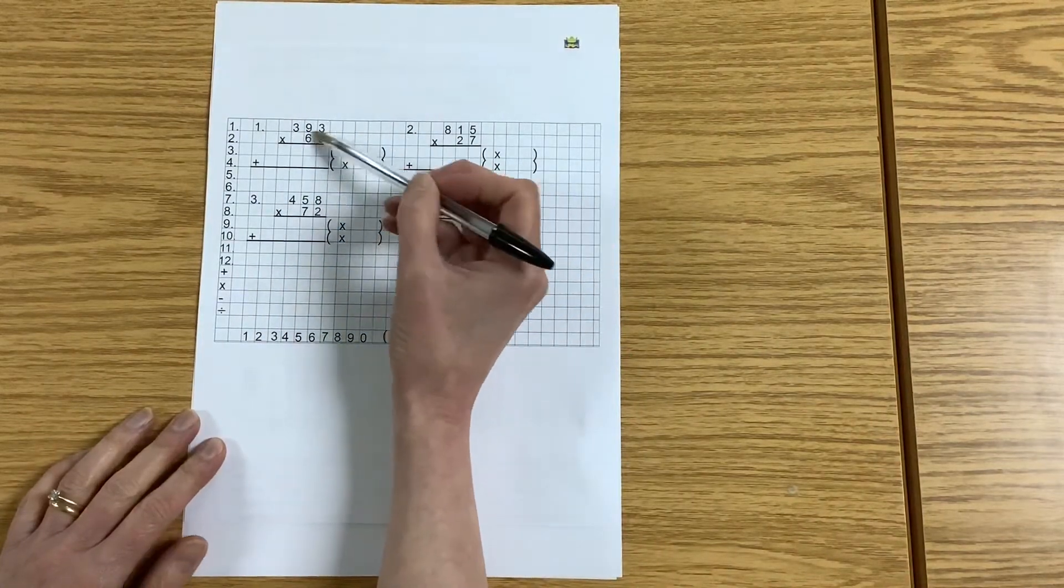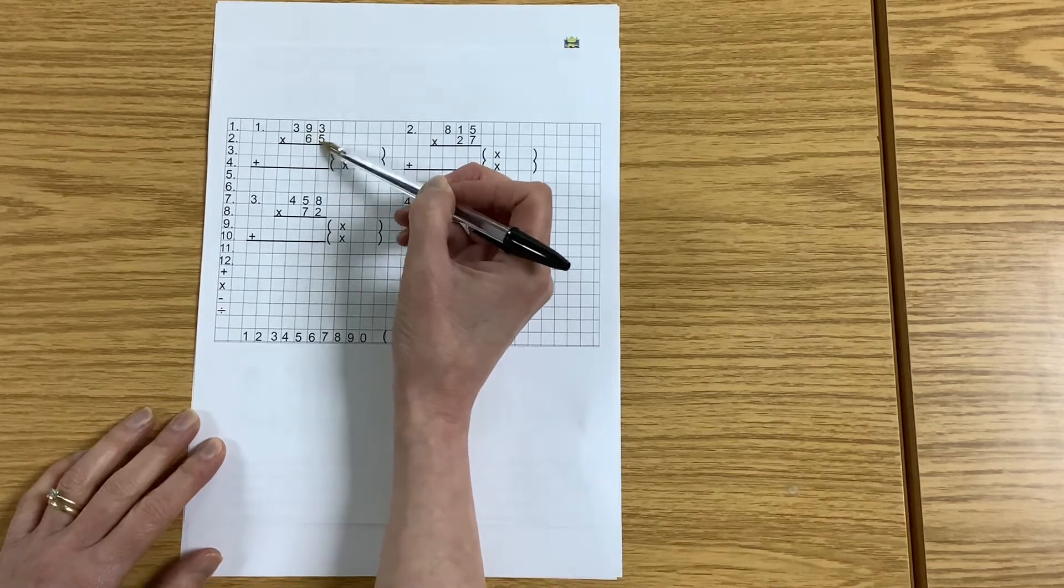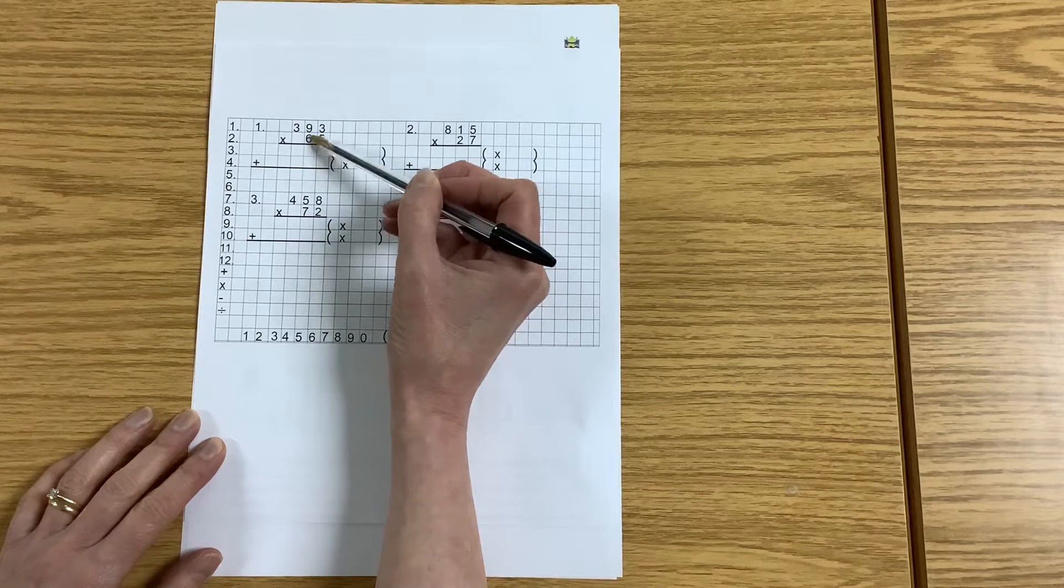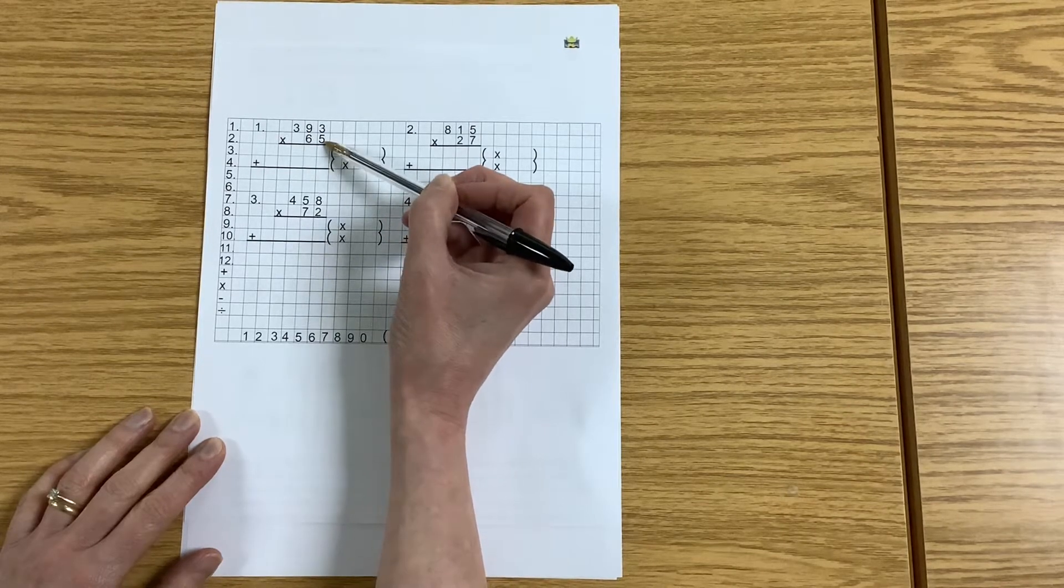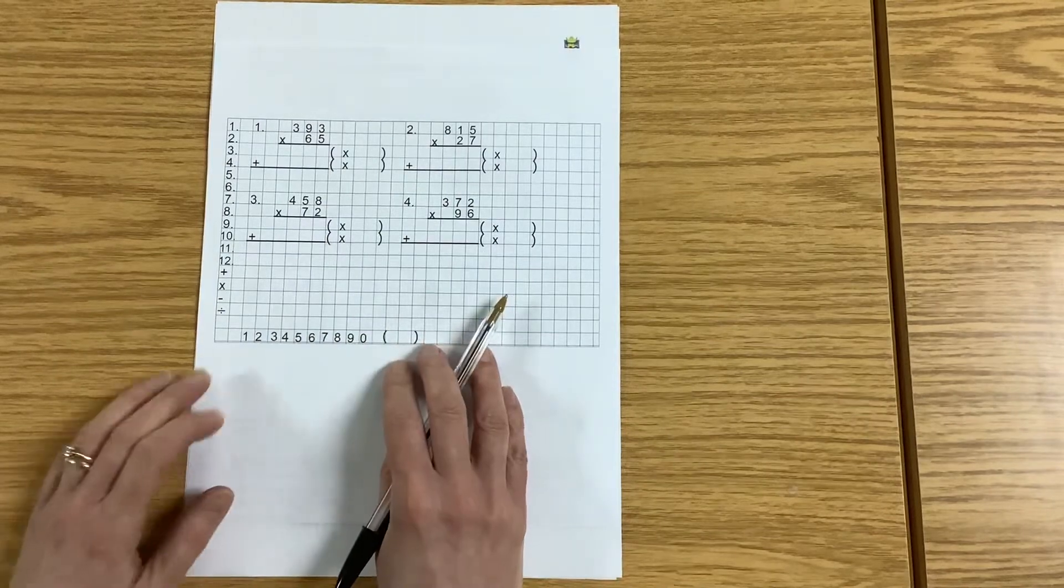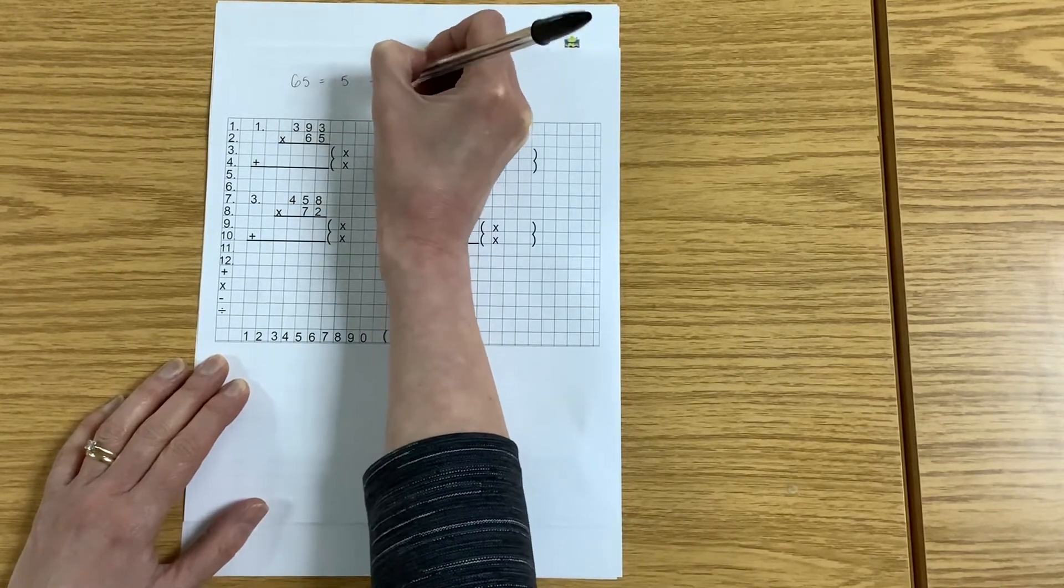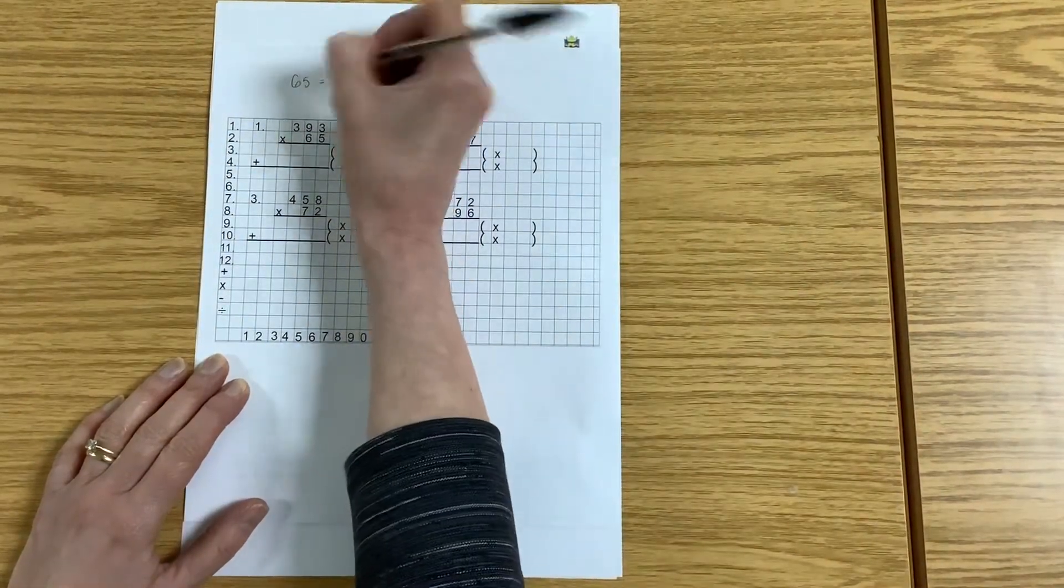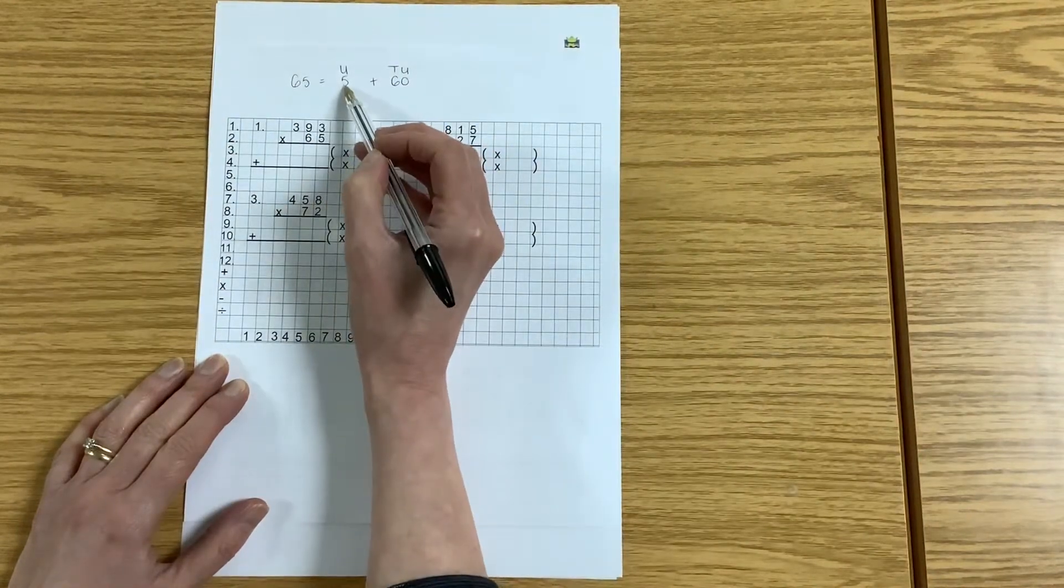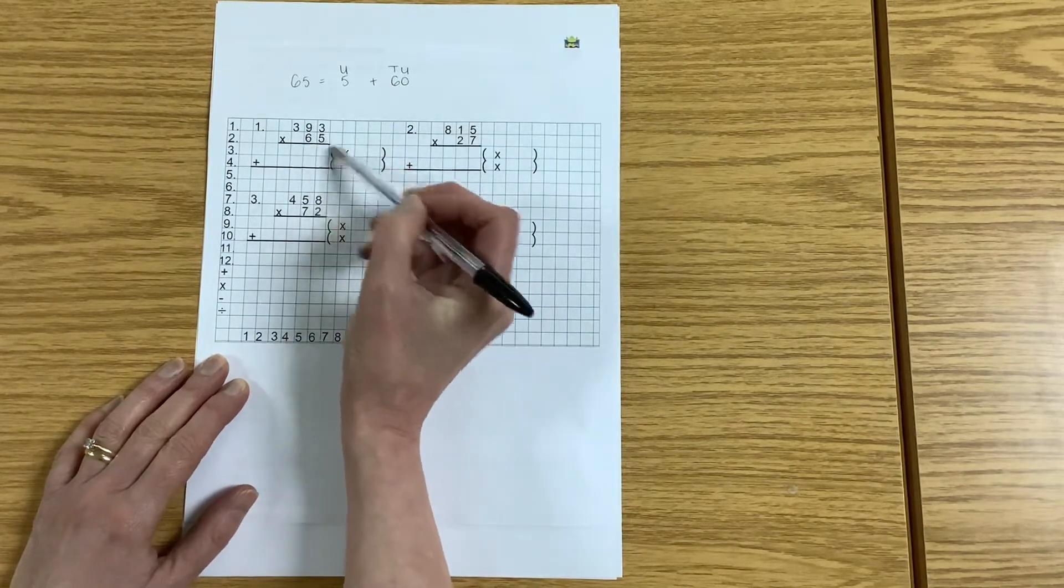If we look at the first question, we've got 393 and we're multiplying it by 65. Now it would be very difficult for me to count in groups of 65, 393 times. So what we did last term was take this 65 and break it down. 65 is the same as 5 add 60—it's 5 ones and 6 tens—and we're going to use that information to help us.